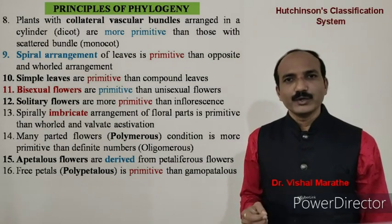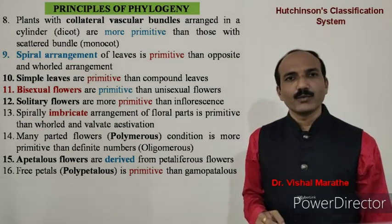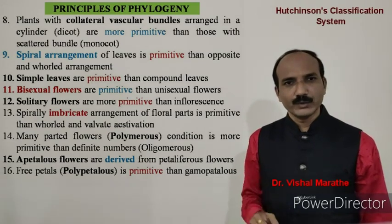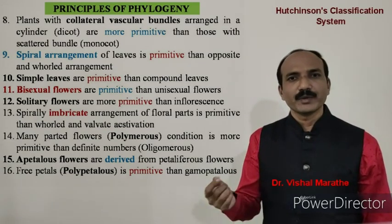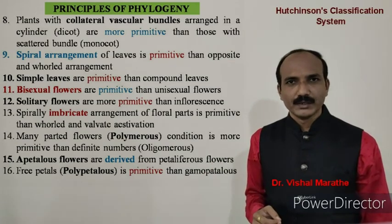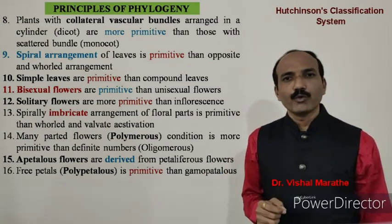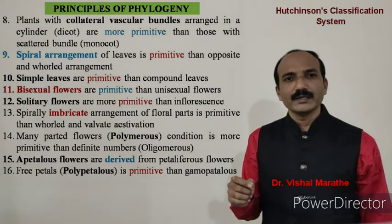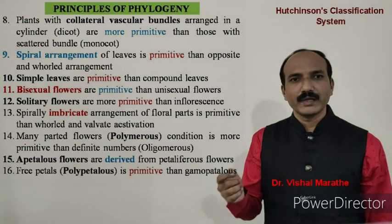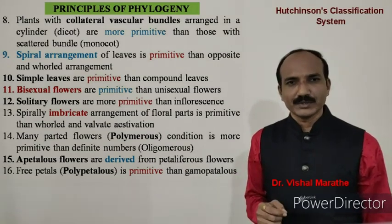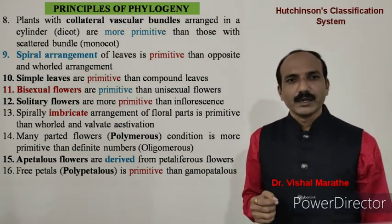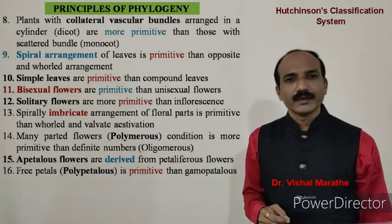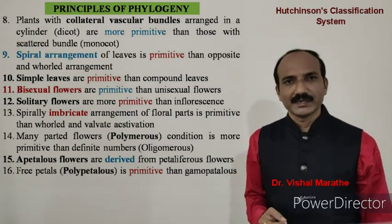Spiral arrangement of leaves is more primitive than opposite and whorled arrangement. Simple leaves are more primitive than compound leaves. Bisexual flowers are more primitive than unisexual flowers. Solitary flowers are more primitive than inflorescences. Spirally imbricate arrangement of floral parts is more primitive than whorled and valvate aestivation. Many-parted flowers, that is the polymerous condition, is more primitive than a definite number, that is the oligomerous condition.